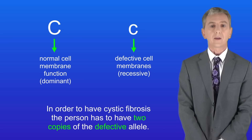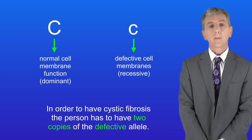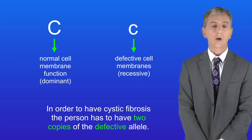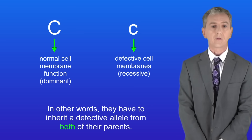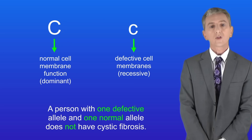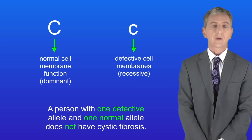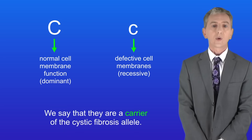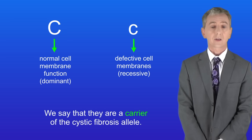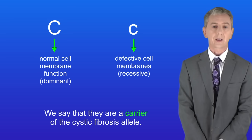In order to have cystic fibrosis a person has to have two copies of the defective allele — in other words they have to inherit a defective allele from both of their parents. A person with one defective allele and one normal allele does not have cystic fibrosis. We say that they are a carrier of the cystic fibrosis allele.